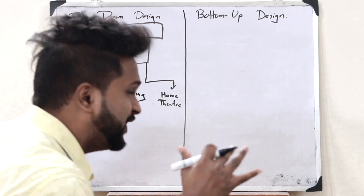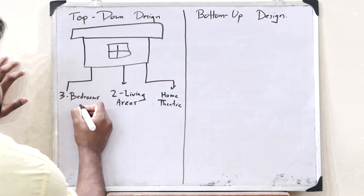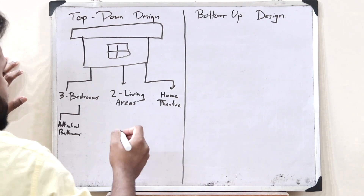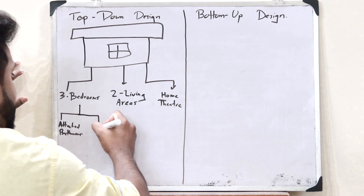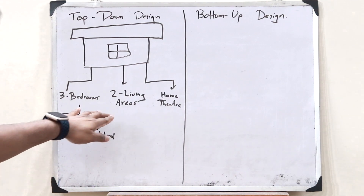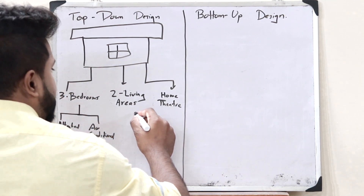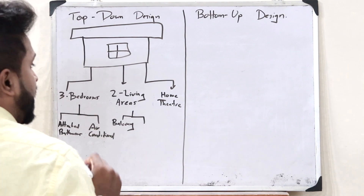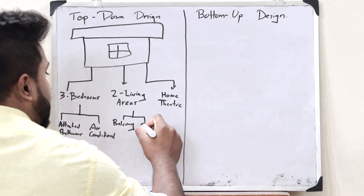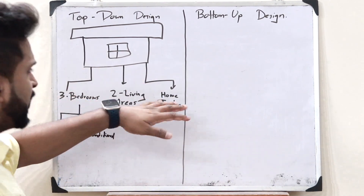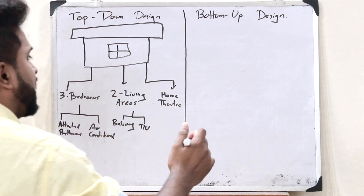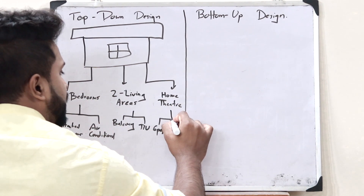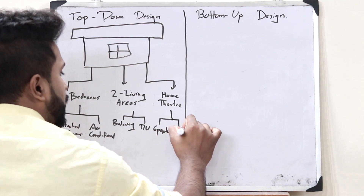Upon further investigation, I find that each of these bedrooms has got attached bathrooms and each of these bedrooms is air conditioned. And in each of these living areas, I see that they have an individual balcony and a provision for a television. And here, in this particular home theater, upon further investigation, I can see that it can seat around six people and it has got Dolby Atmos.